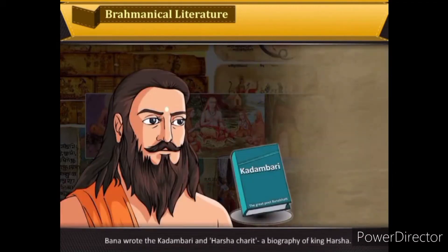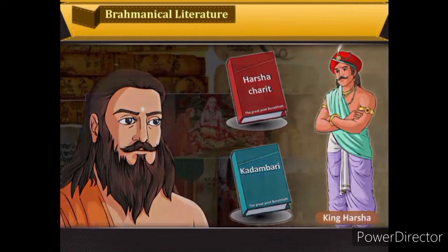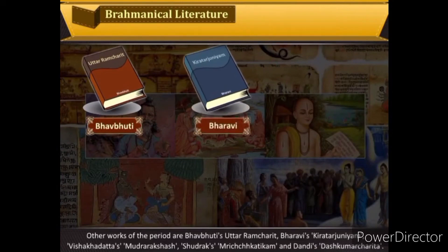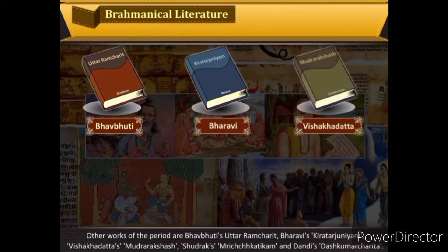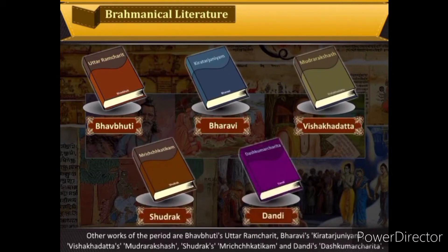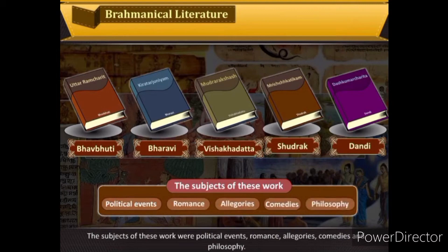Bana wrote the Kadambari and Harshacharita, a biography of King Harsha. Other works of the period include Bhavbhuti's Uttararamacharita, Bharavi's Kiratarjuniya, Vishakhadatta's Mudrarakshasa, Shudraka's Mricchakatika, and Dandi's Dasakumarcharita. The subjects of these works were political events, romance, allegories, comedies and philosophy.